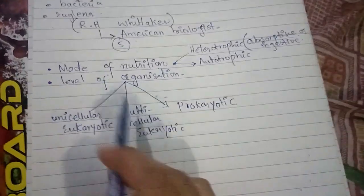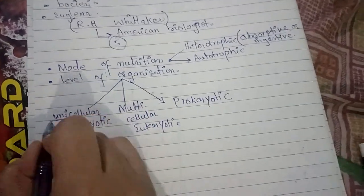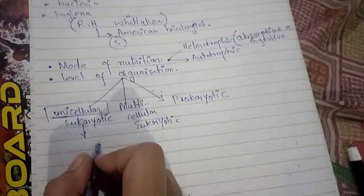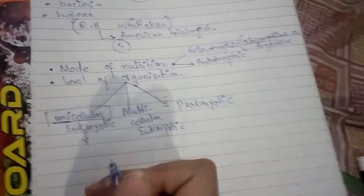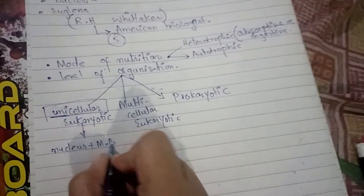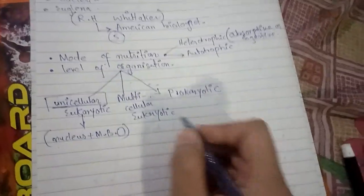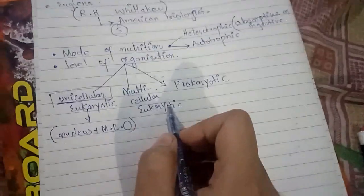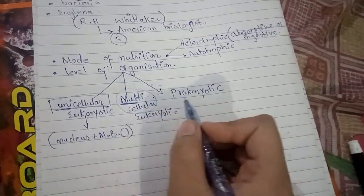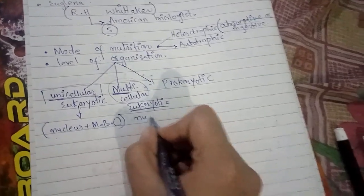Eukaryotic means a single cell having a true nucleus and membrane-bounded organelles. Multicellular eukaryotic means many cells — more than one cell — plus a eukaryotic true nucleus and membrane-bounded organelles.